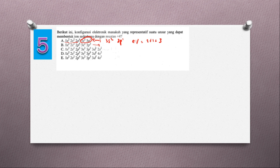Sekarang yang B: 2, 8, 3S2, 3P3. Elektron valensinya 2 tambah 3 sama dengan 5. Berarti bukan ya. Yang B juga salah.